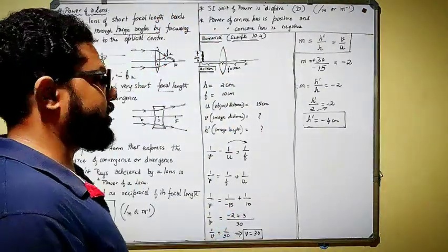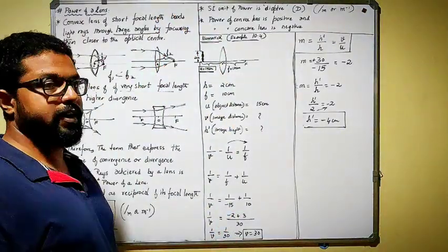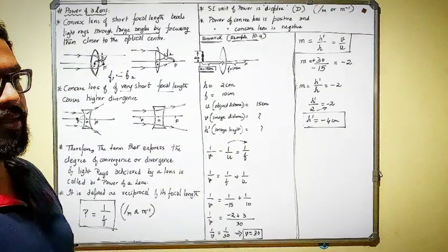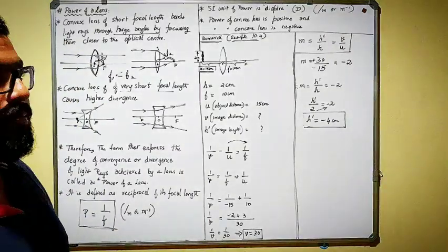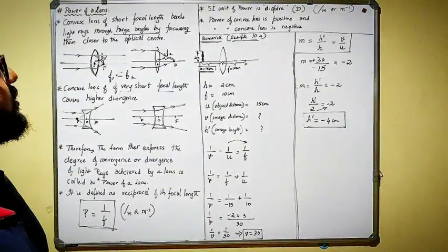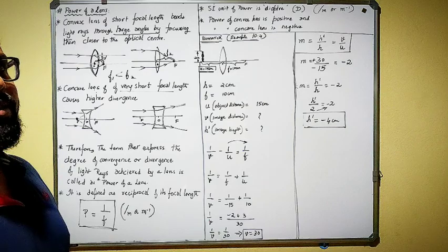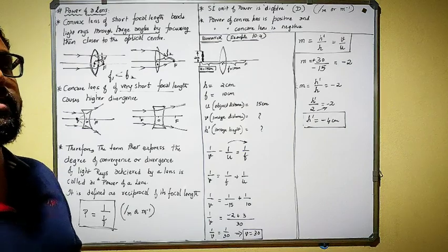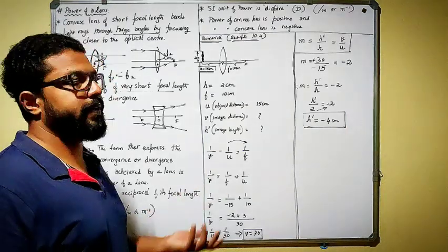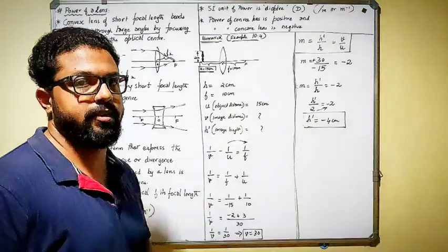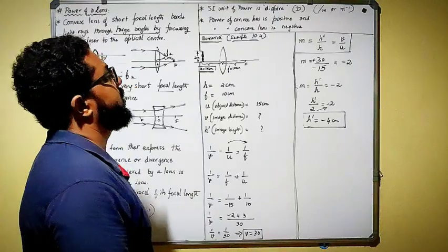They might ask: define power of a lens, write the formula for the same, and what is the SI unit of power of a lens. Think about indirect ways they could ask these questions and frame questions for yourself.